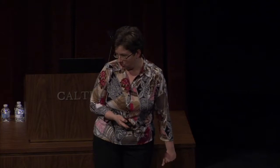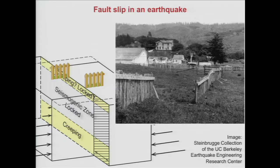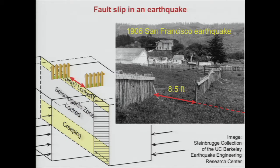Incidentally, when you look at this picture, you're thinking — who would build a fence across the fault? Well, there is a photograph of that. Of course, people didn't know they were building across a fault. Here, just like in our cartoon scenario, is a fence that was happily sheared. This is a famous photo — it shows what happened in a portion of the 1906 San Francisco earthquake.